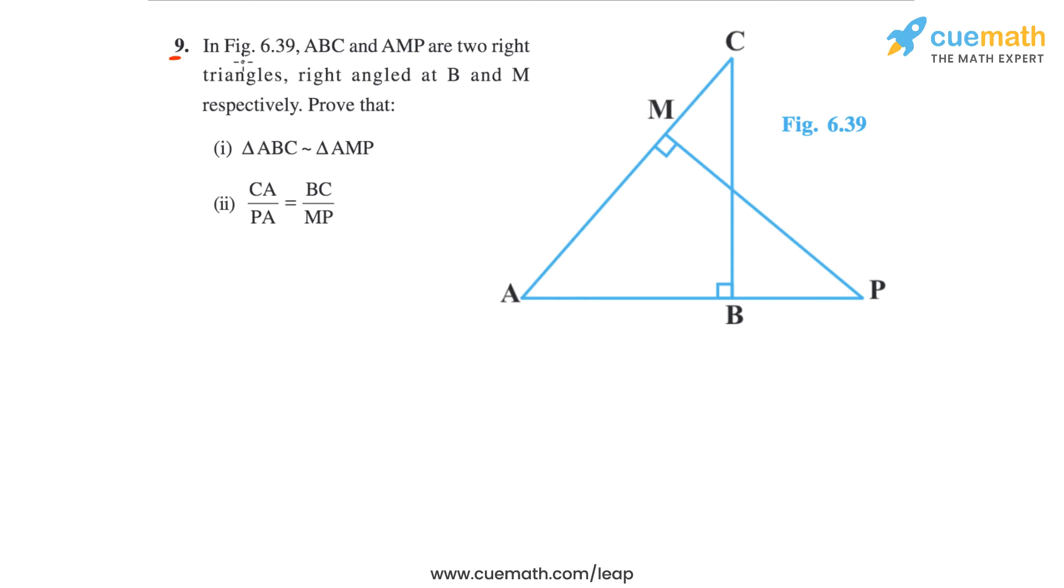In question 9, we are given this figure 6.39 that you see here, and the problem statement says ABC and AMP are two right triangles, right angled at B and M respectively.